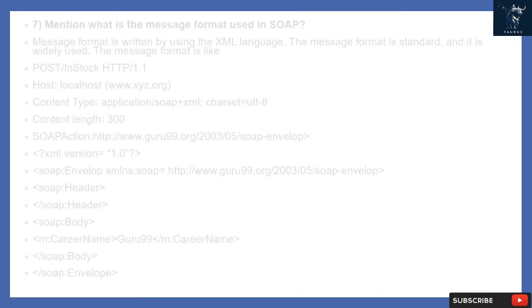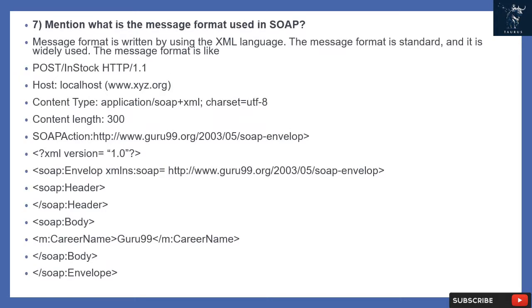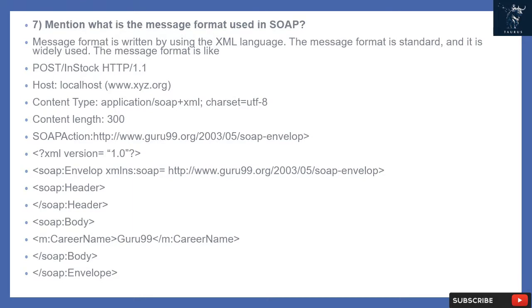Question 7: What is the message format used in SOAP? The message format is written using the XML language and is widely used as a standard. The request message format includes HTTP POST, HTTP 1.1, host, content-type: application/soap+xml, charset=UTF-8, content-length: 300, and a SOAP action header pointing to the appropriate namespace URI.